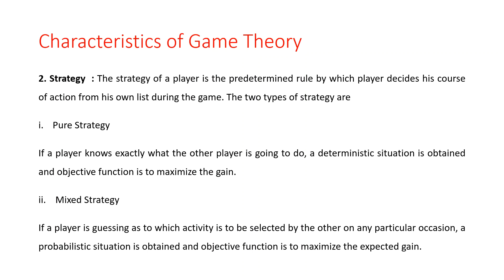There are two types of strategies: the first is a pure strategy and the second is a mixed strategy. In the pure strategy, if a player knows exactly what the other player is going to do, a deterministic situation is obtained and the objective function is to maximize the game. In this case, the player already knows how the other player is going to perform. The pure strategy is a decision rule to always select a particular course of action.